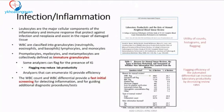We also have immature granulocytes, the IG component, which comprises promyelocytes, myelocytes, and metamyelocytes. Some analyzers can flag the IG component and some don't. Flagging can increase lab productivity by reducing smear review; without IG flagging capability, workload increases and lab productivity decreases.